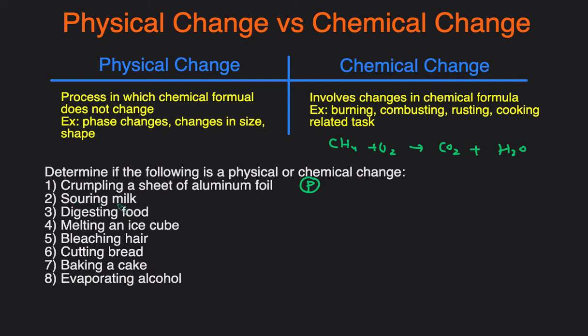Next one, souring of milk. That would be a chemical change because a chemical reaction is actually happening and that's what's causing the milk to be sour. Digesting of food, that would be another example of a chemical change.